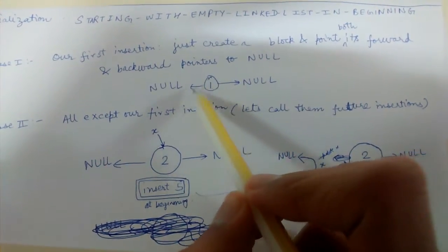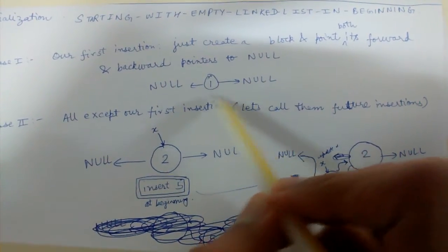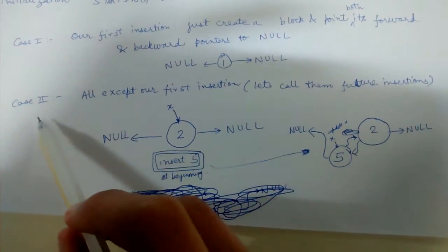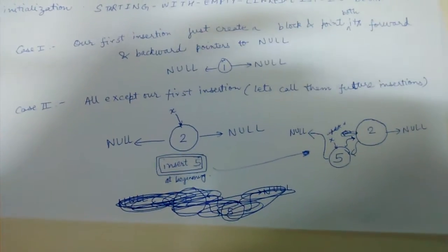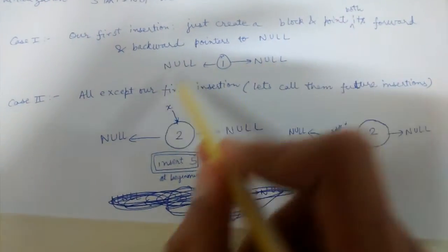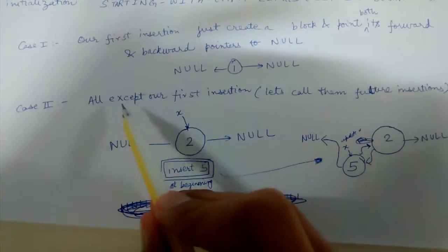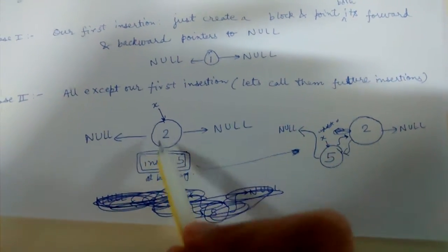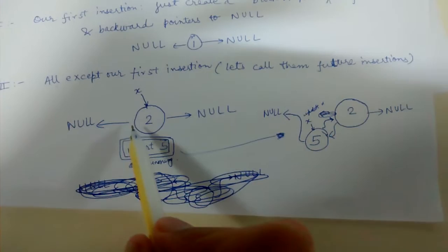And in case two, all except our first insertion, that is all insertions except our first insertion, let's call them future insertions. They are exactly similar to the previous case, so let us see what we will do here.